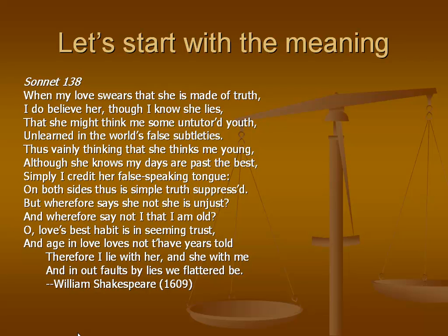'But wherefore says she not she is unjust?' She's not saying she's a liar, and he's not saying he's not old — they're both lying by omission. Then: 'Oh, love's best habit is in seeming trust, and age in love loves not to have years told.' So they can't be in love if he doesn't trust her, and she can't always be talking about how old he is. In the Shakespearean sonnet, part of the form is those two lines at the end, which often have a moral-of-the-story feeling. He says 'therefore I lie with her and she with me' — this has a double meaning, a double entendre. To 'lie with' always means to be intimate with in Shakespeare, but it also means they're both lying. 'And in our faults by lies we flattered be.' This is how their love works.